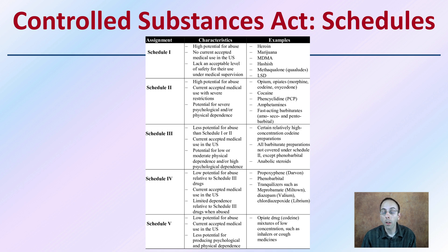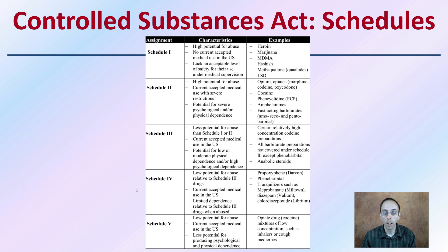We see some examples there. Probably the one under most scrutiny is marijuana, as far as whether it fits all of these Schedule 1 characteristics. Schedule 2 has a high potential for abuse. Schedule 3 is less potential for abuse than Schedule 1 or 2, and so on down to Schedule 5, where it's a low potential for abuse.